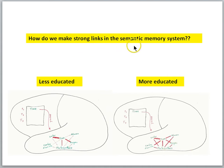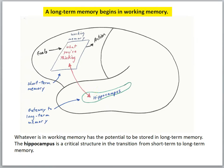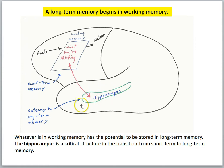The beginning of the process hinges on what is in our working memory. A long-term memory begins in working memory, and the contents of working memory then have the potential to be stored in the long-term memory system. A critical component of that process is the hippocampus. We can think of this as the gateway to the long-term memory system. The contents of working memory will be processed by the hippocampus, and if conditions are right, whatever we were thinking about or experiencing can become a long-term memory.